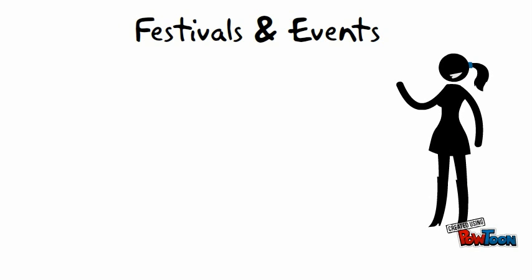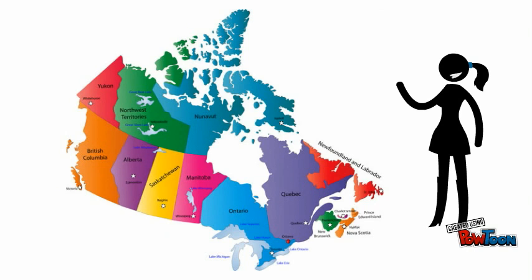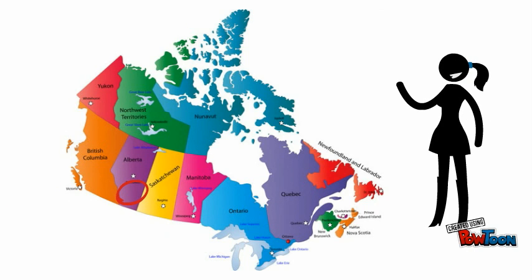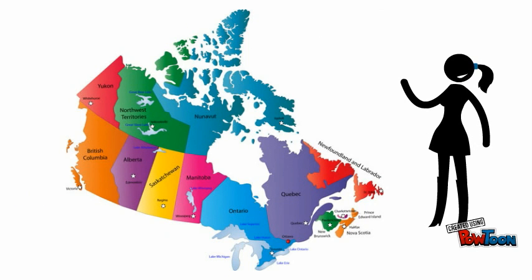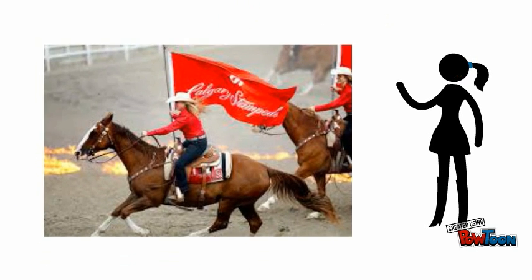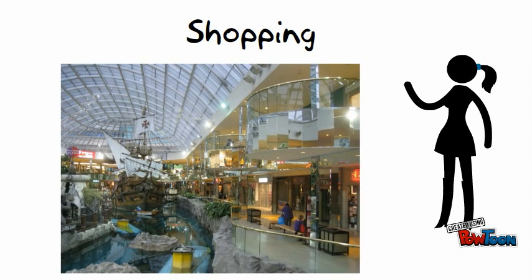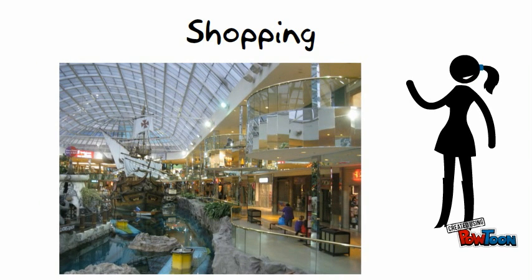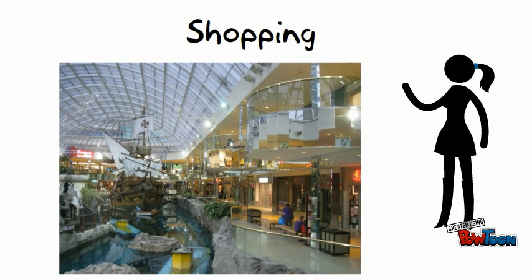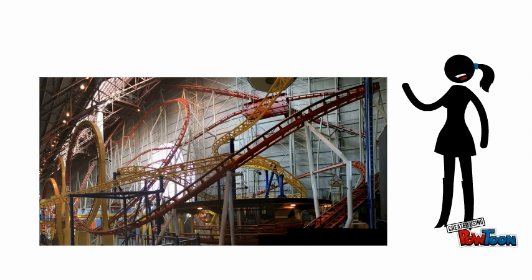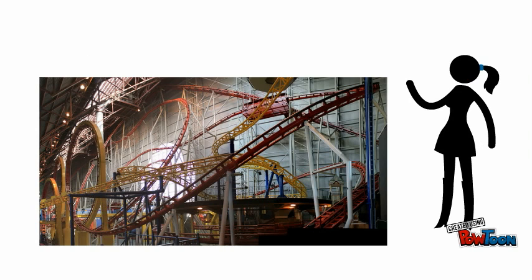For those people that like to go to festivals and events, there is the Calgary Stampede, which happens every year in Calgary, Alberta. This is a festival that attracts people from all over the world for different rodeo activities as well as a famous bull stampede. For those who like to shop, there is the Edmonton Mall in Edmonton, Alberta — a mall with a roller coaster, a water park, and many other attractions that draw people from all over the world.